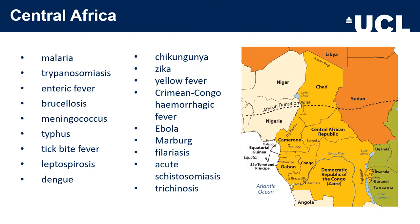Central Africa — including Nigeria, the Central African Republic, Cameroon, Gabon, Congo and Uganda — has much more sinister pathogens including haemorrhagic fevers. The differential diagnosis includes malaria, trypanosomiasis, enteric fever, brucellosis, meningococcus, typhus, tick bite fever, leptospirosis, dengue, chikungunya, Zika, yellow fever, Crimea-Congo haemorrhagic fever, Ebola, Marburg, filariasis, acute schistosomiasis and trichinosis. You should have a high index of suspicion and a low threshold for isolating these patients in a high-secure infectious diseases unit.